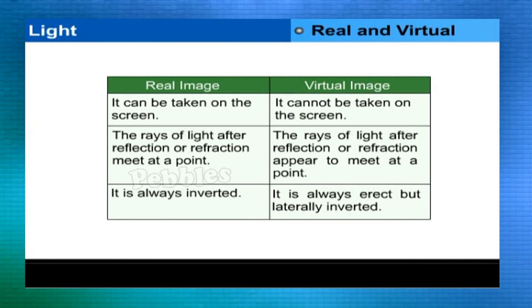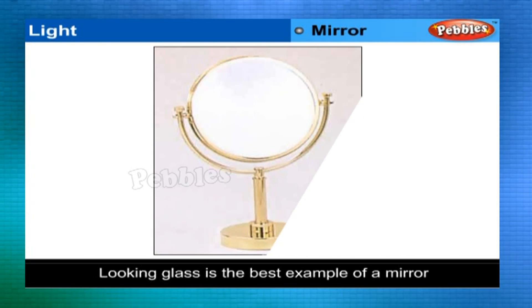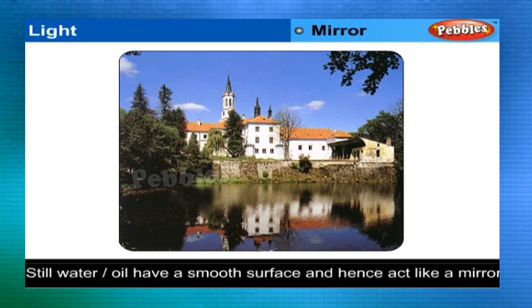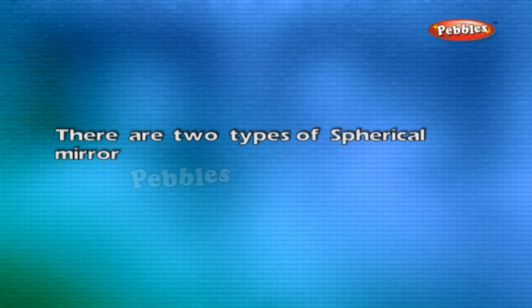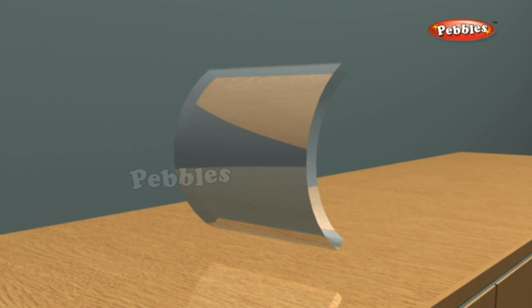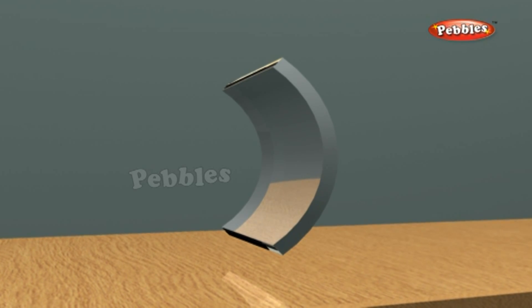Differences between real and virtual images are shown in figures. Any smooth polished surface that can return rays of light into the same medium is called a mirror. Looking glass is the best example; highly polished metal surfaces, still water, oil, and even highly polished furniture also act as mirrors. There are two types of spherical mirrors: concave mirrors and convex mirrors. In a concave mirror, the outer surface is polished; in a convex mirror, the inner surface is polished.